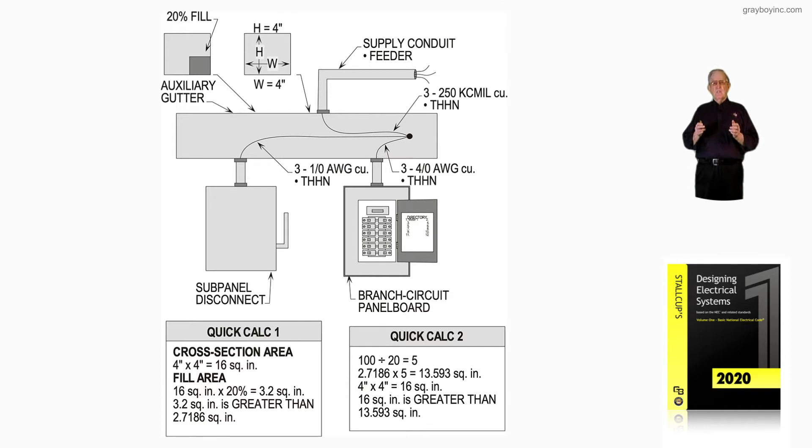We are tapping with smaller conductors to the switch and the panel board. So that means 240.21(B) of the code is being applied here. Notice we have a raceway at the top coming into the top of the auxiliary gutter because it's over 24 inches long. But we have nipples in the taps there. Notice we have three 1 AWG THHNs in the subpanel disconnect switch. To the panel board with the main to the right, we have three 4 AWG THHNs.